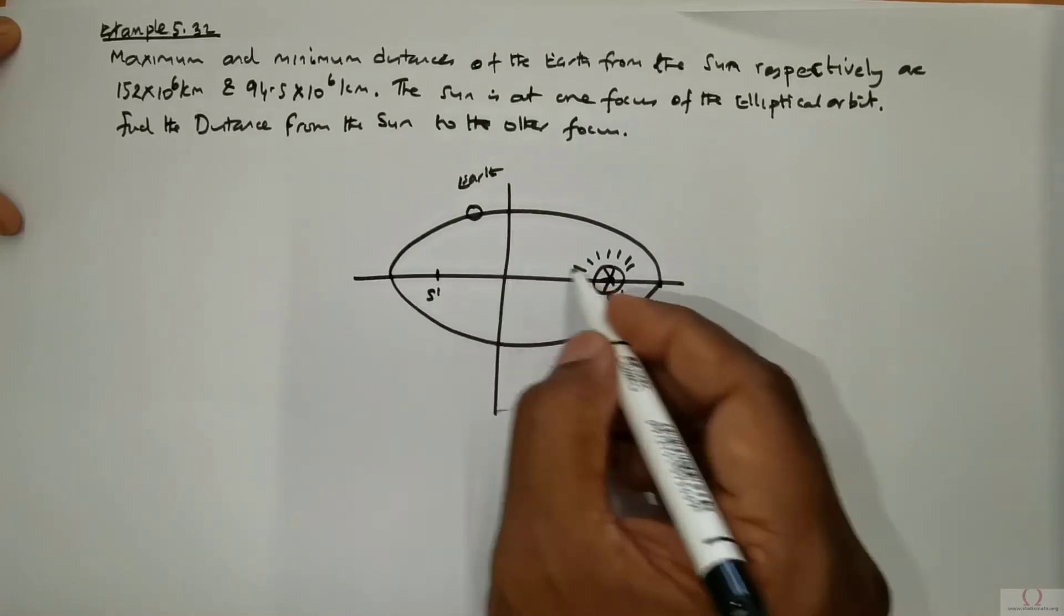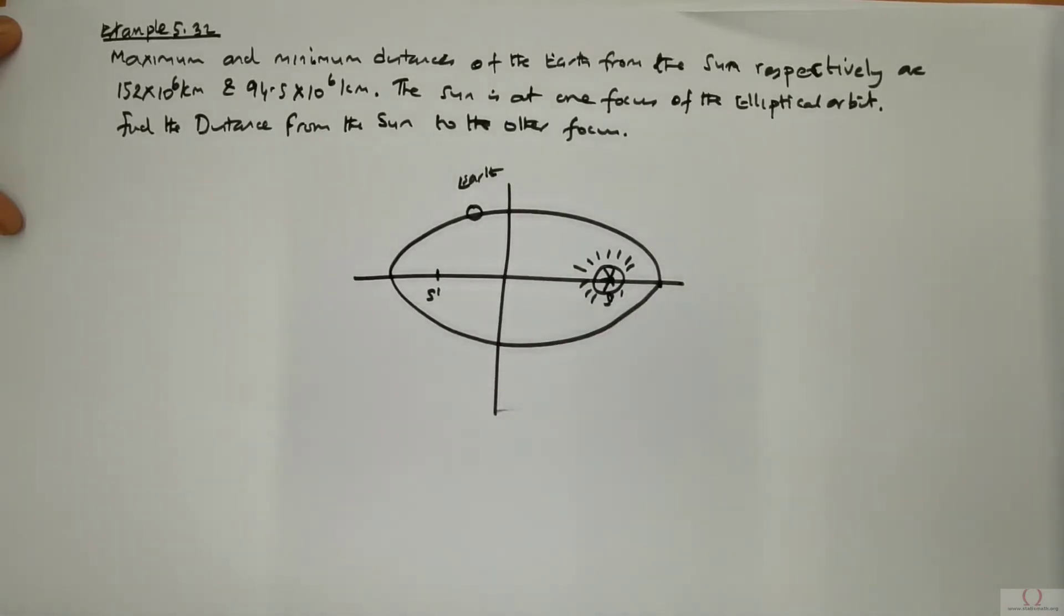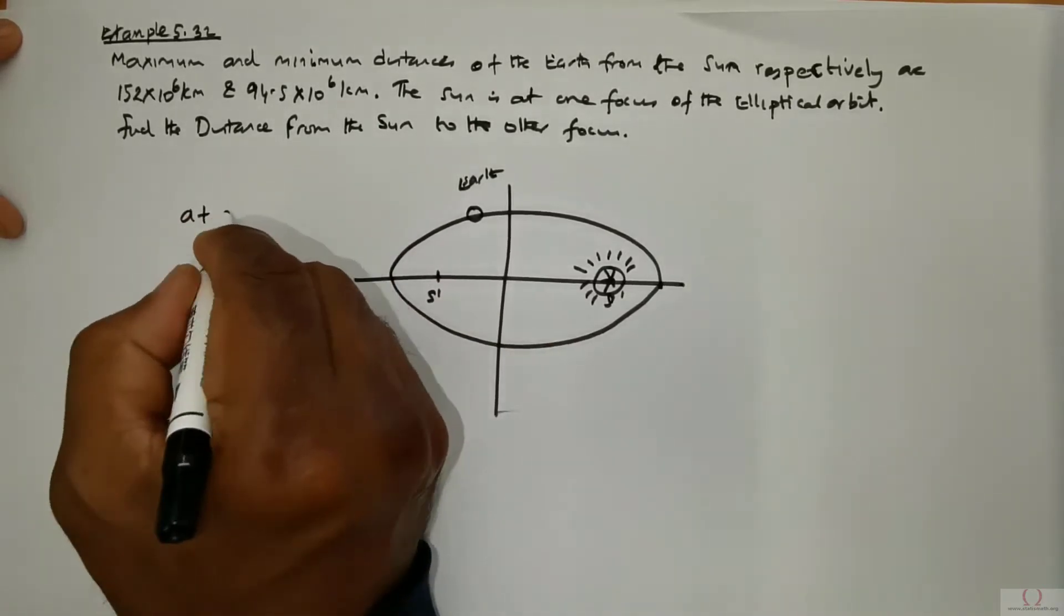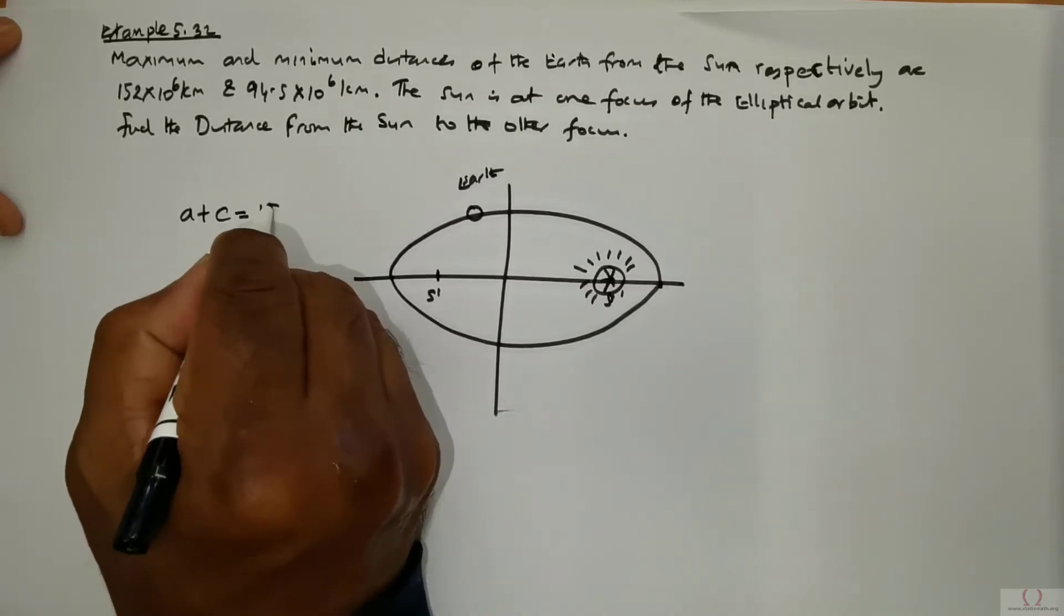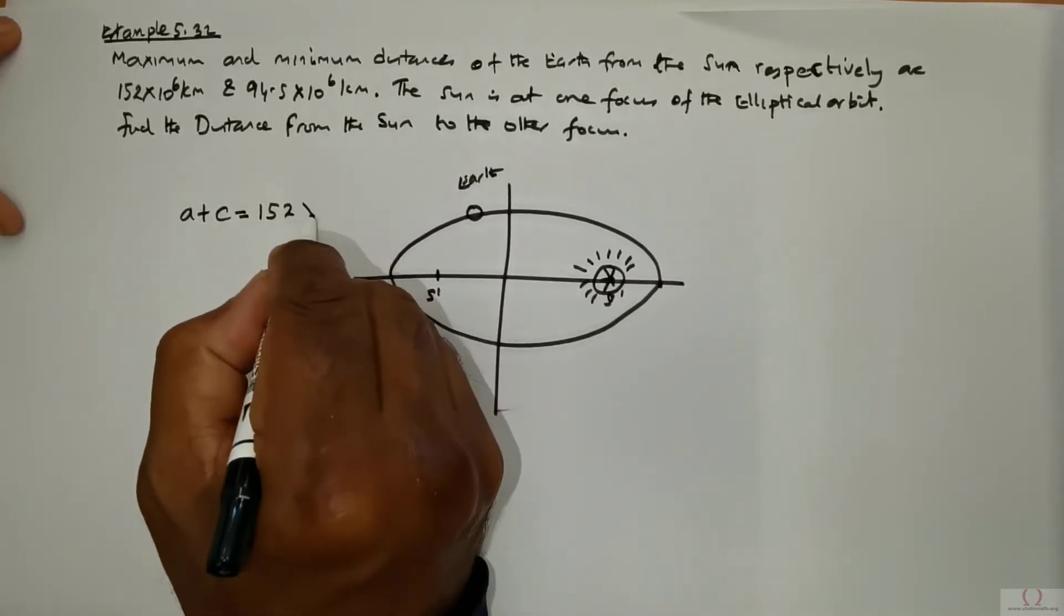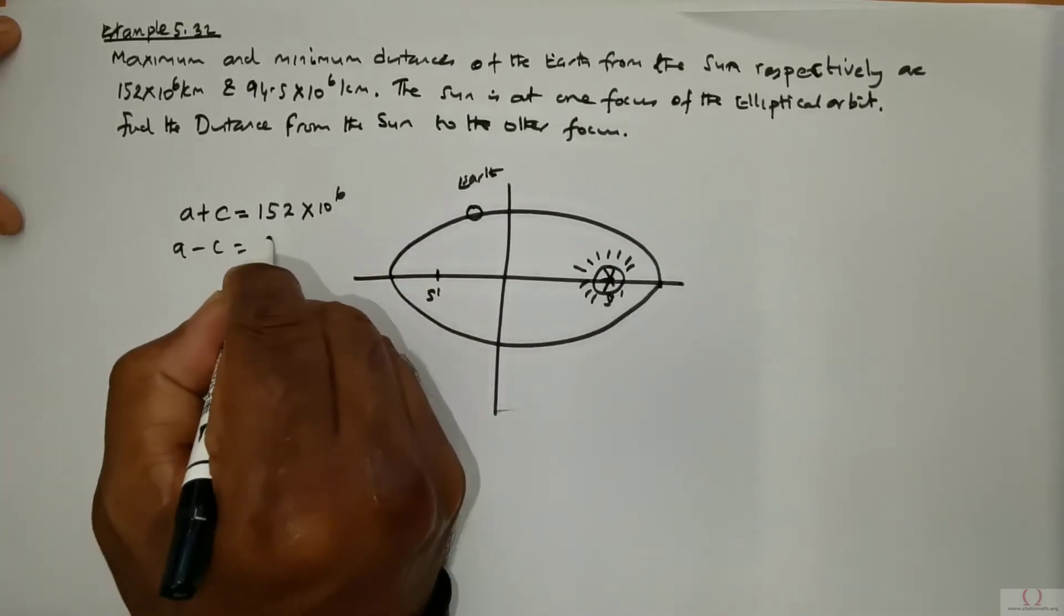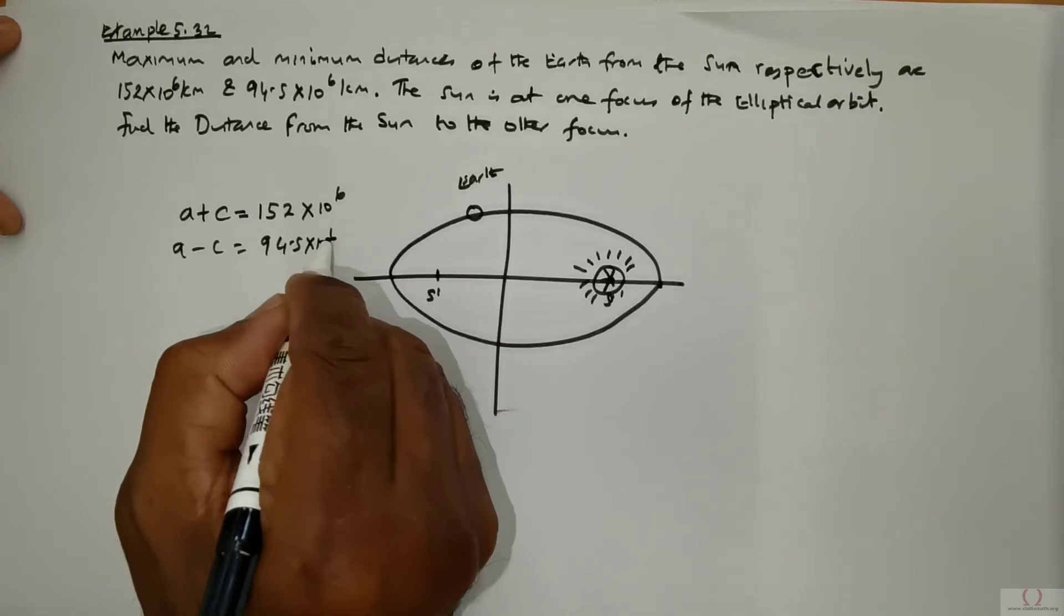So this distance between the earth and the sun are given. So foremost we would have to start by writing a plus c is equal to the largest distance, maximum distance 152 times 10 to the power 6 and then a minus c is equal to 94.5 times 10 to the power 6.